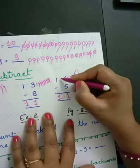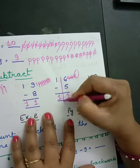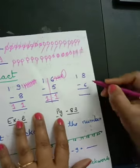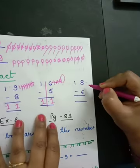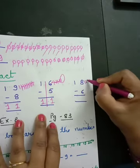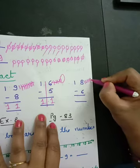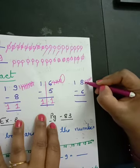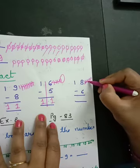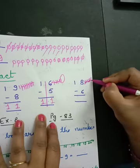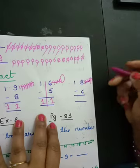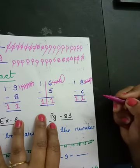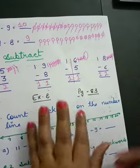Now listen all of you: write digit in the same order. Draw 8 lines — 1, 2, 3, 4, 5, 6, 7, 8. Cut 6 lines: 1, 2, 3, 4, 5, 6. How many lines remain? Two. Got it all of you?